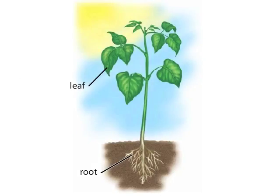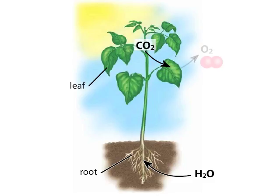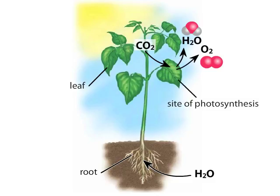In plants, water enters through the roots while atmospheric carbon dioxide enters through openings in the leaves called stomata. Oxygen and water are released by the plant through these same openings. Photosynthesis takes place within the leaves in specialized organelles called chloroplasts.